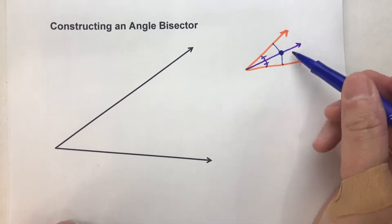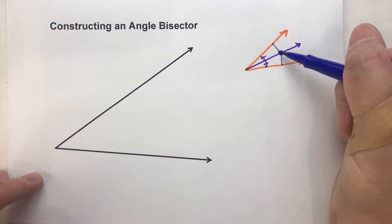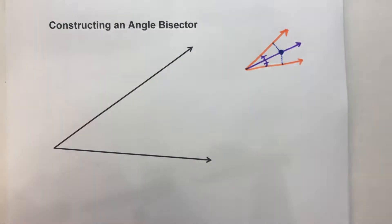So, the reason why this is important is because we can use that fact to find the angle bisector of this angle right here. So let's do that.